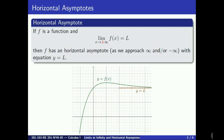First of all, if f is a function and the limit of f of x as x approaches either plus or minus infinity is equal to L, then this means that y equals L is a horizontal asymptote of the graph of f. The figure illustrates the case when this asymptote is when x goes to infinity, but of course the same situation could happen towards minus infinity.